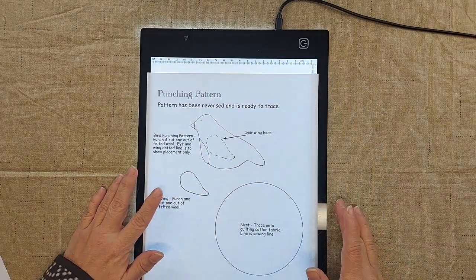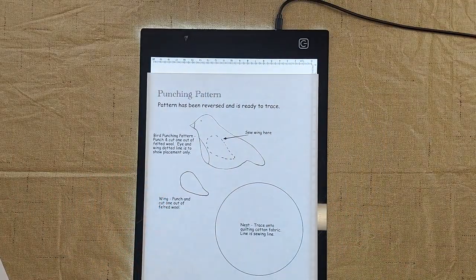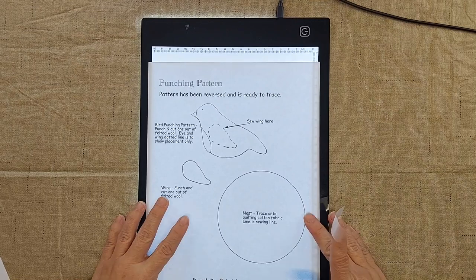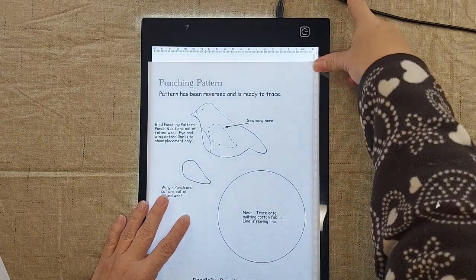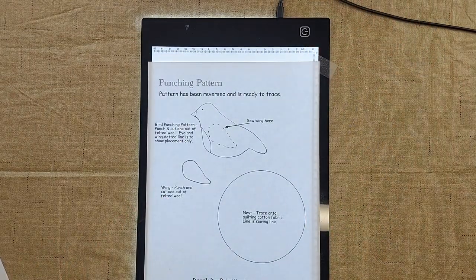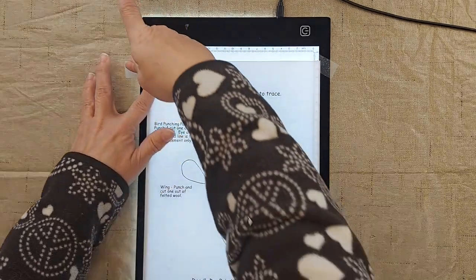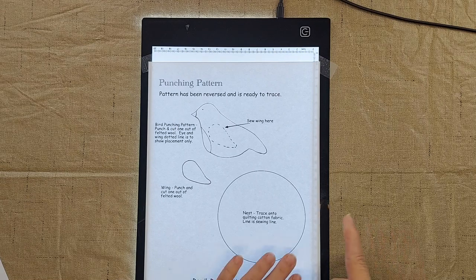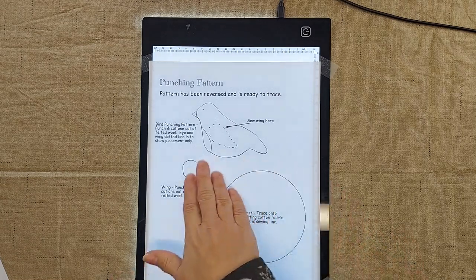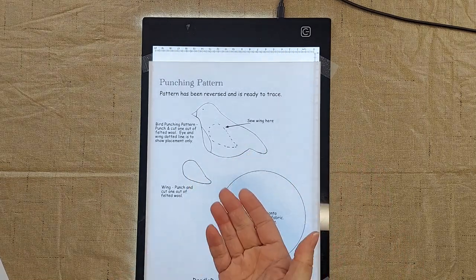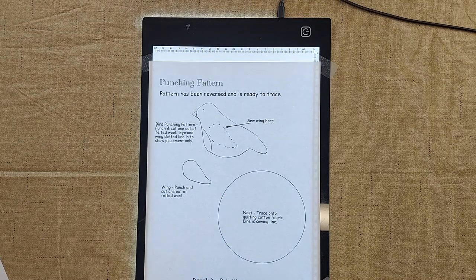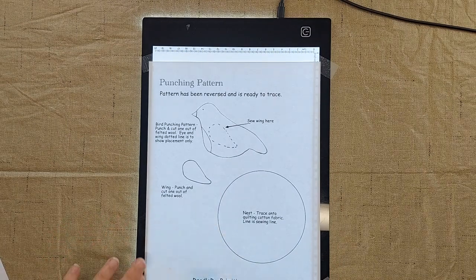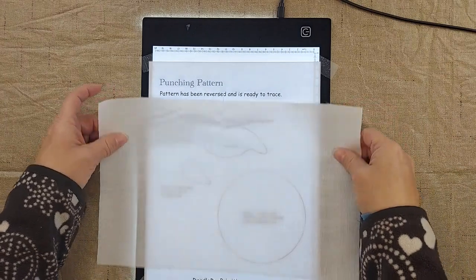...is with either the light box or the window, tape the pattern down to the light box, or you could tape it to a window. And either way, as you can see, it has light coming up behind it, and that will allow you to see through the fabric.